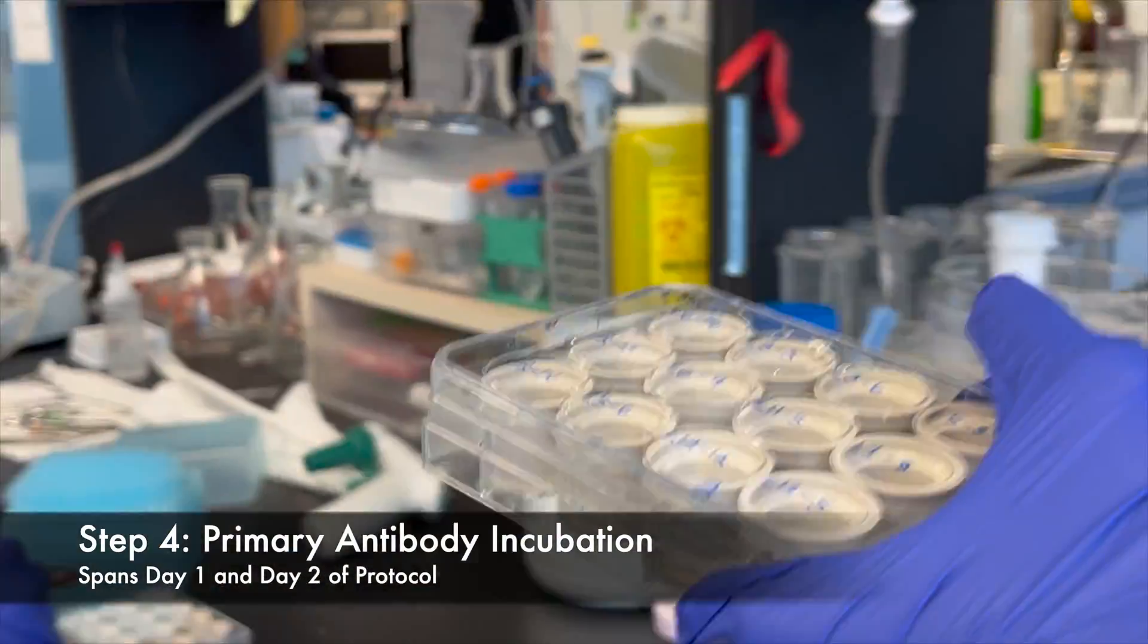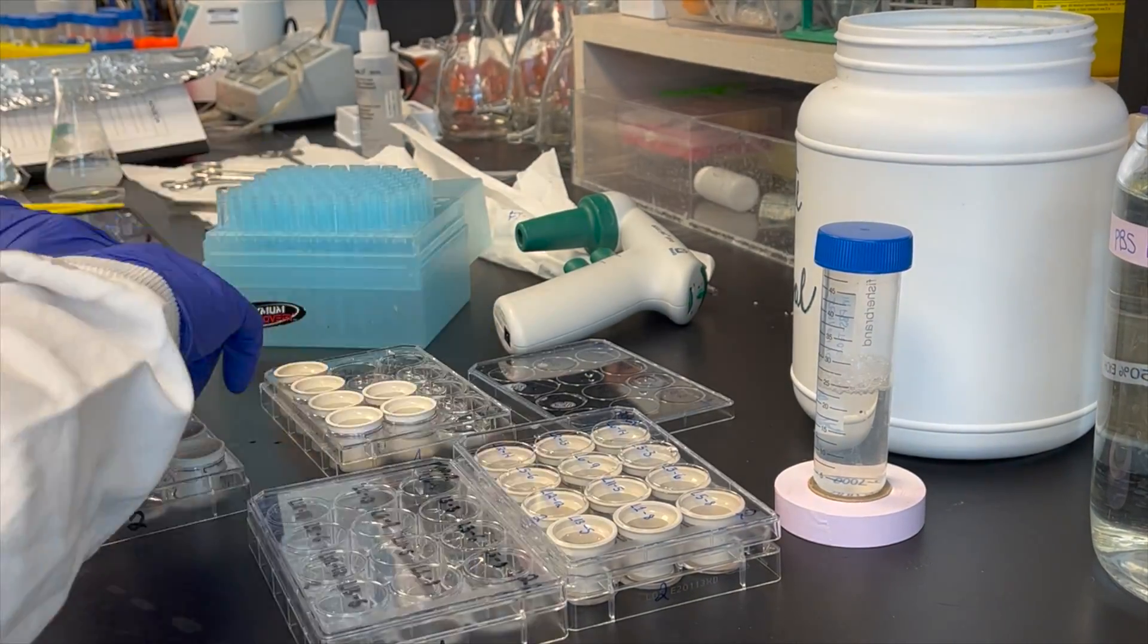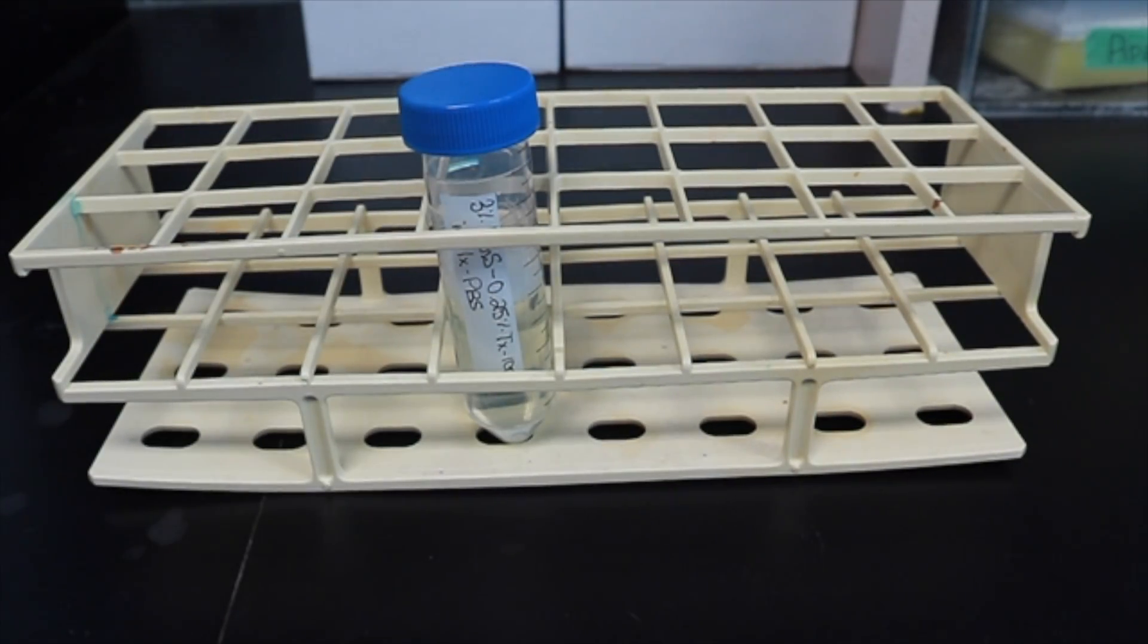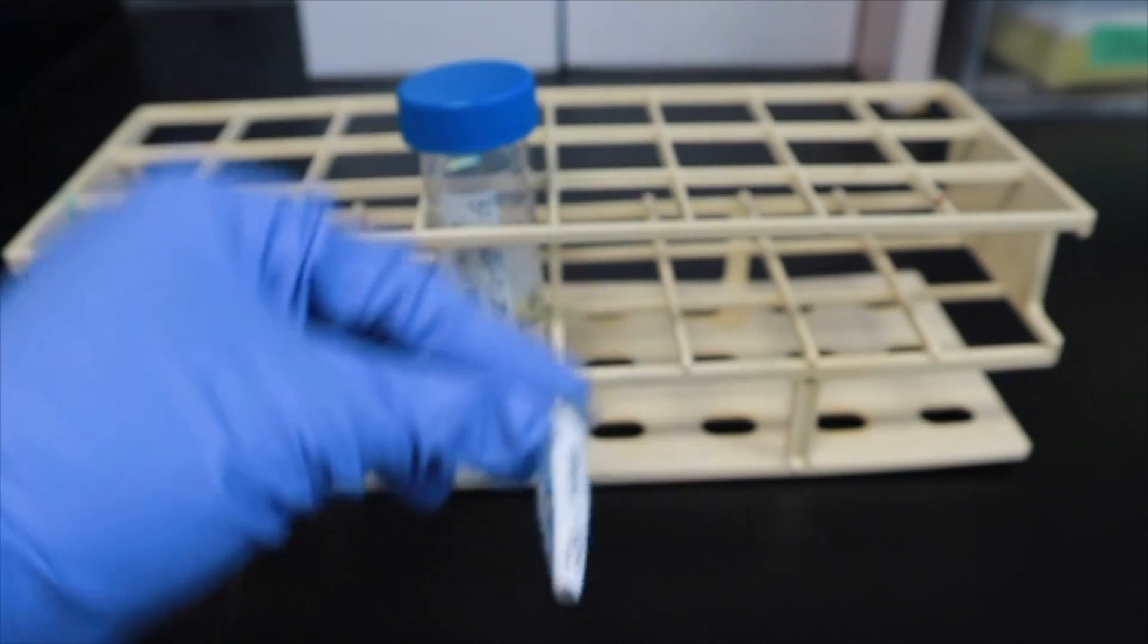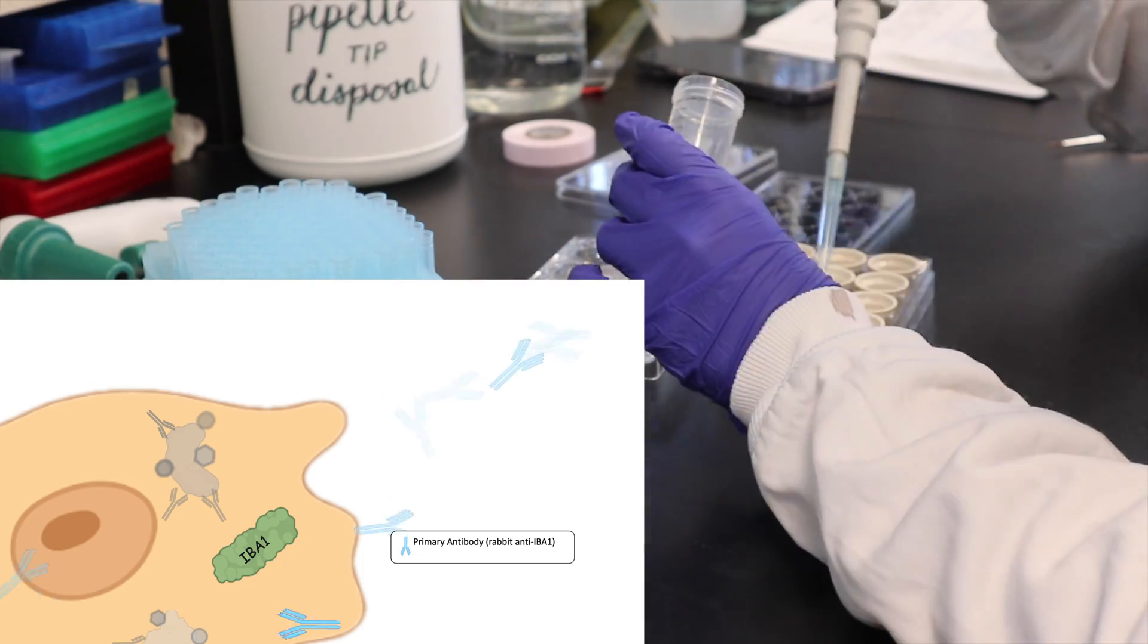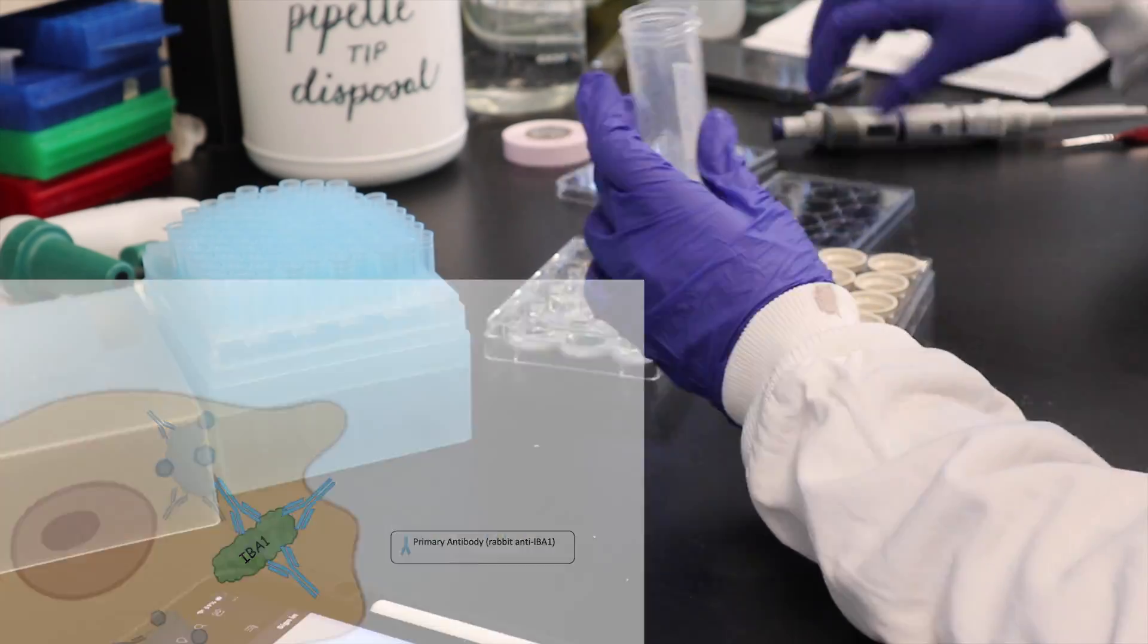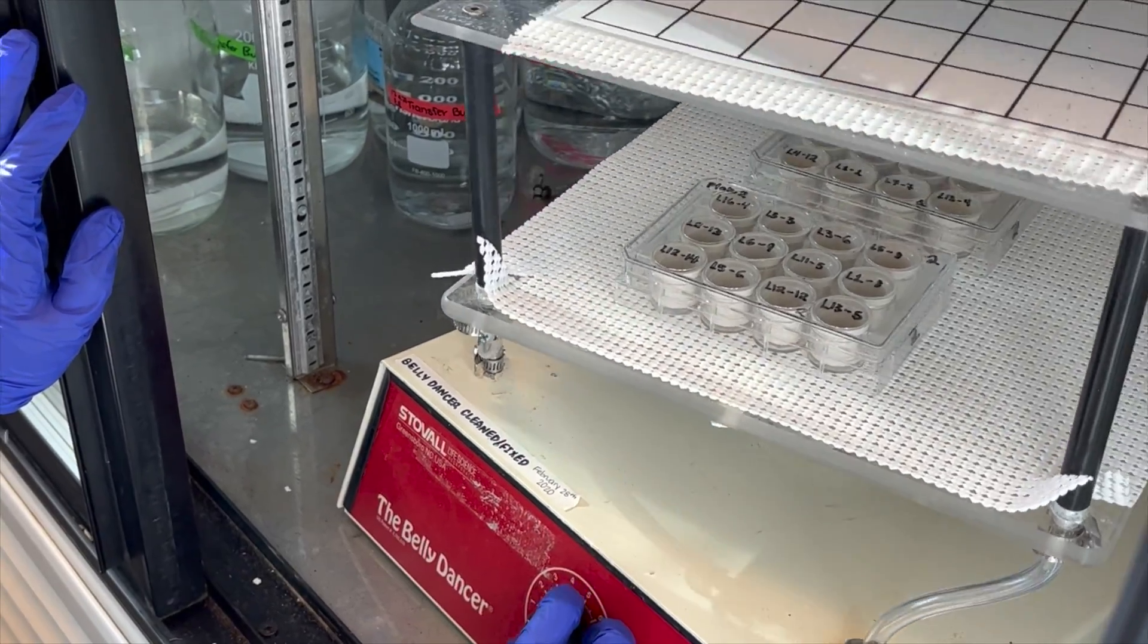After the blocking step, retrieve your samples and transfer your tissue to a new clean 12-well plate in preparation for treatment with the primary antibody. To make the primary solution, you will need a 1 in 1000 dilution of Rabbit Anti-IBA1 into the previously made buffer solution. You can then add approximately 1 milliliter of the antibody solution to each well before incubating plates at 4 degrees Celsius for a span of 48 hours, thus completing day 1 and day 2 of our protocol.